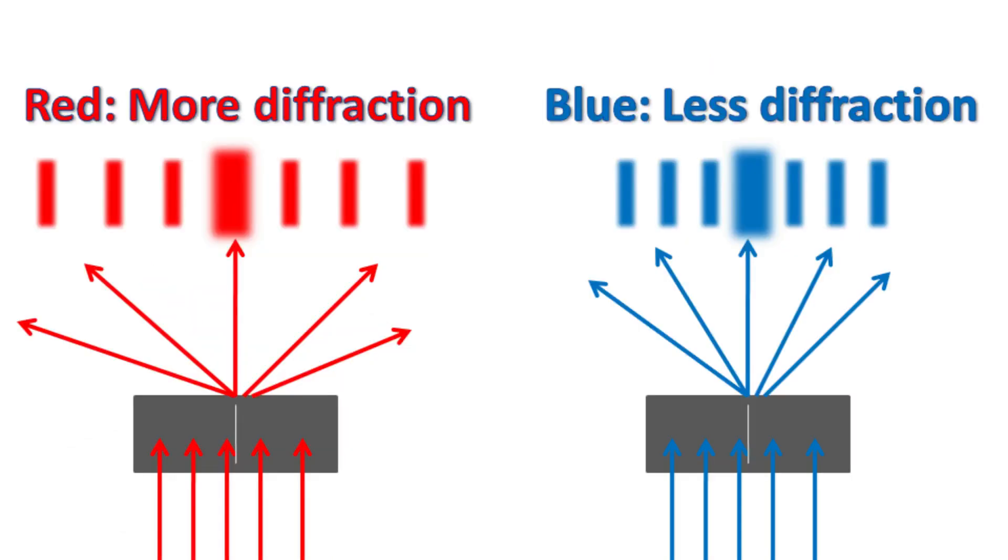So the idea is, if we have less wavelength, the diffraction will be less and resolution will be high.